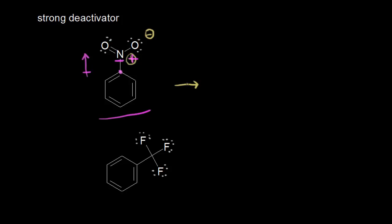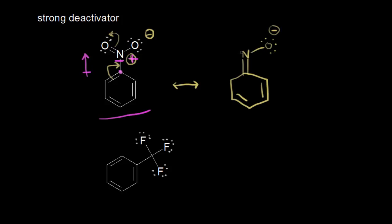Let's look at resonance next. We could draw a resonance structure where we take these pi electrons and move them in, which would push these electrons off onto your oxygen. So we have our ring with pi electrons, the nitrogen is double bonded to our ring, and we have an oxygen on the right with a negative one formal charge. The nitrogen is bonded to an oxygen on the left, which now has three lone pairs of electrons and therefore has a negative one formal charge. If these electrons in blue move off onto the oxygen, that gives that oxygen a negative one formal charge.